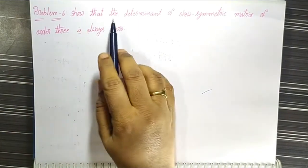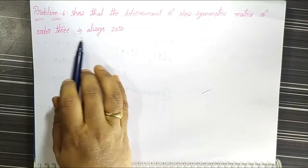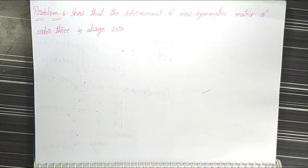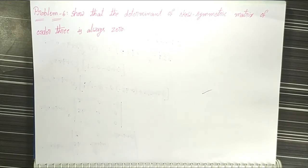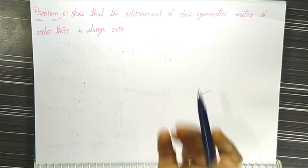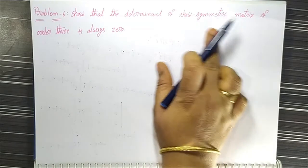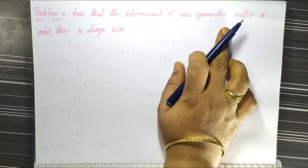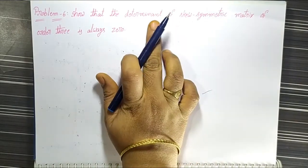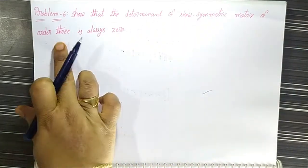The problem is: show that the determinant of a skew symmetric matrix of order 3 is always zero. In this problem we have to show that the determinant of a skew symmetric matrix of order 3 is always zero.